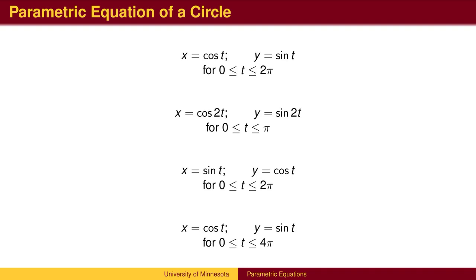The second graph is the same as the first graph, just drawn twice as fast. The third graph is also a circle. It starts at (0,1), which is the top of the circle, and then proceeds around clockwise. The fourth graph is the standard unit circle, traced counter-clockwise twice.